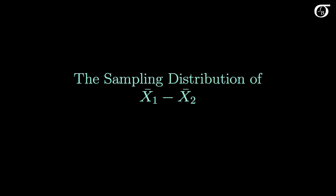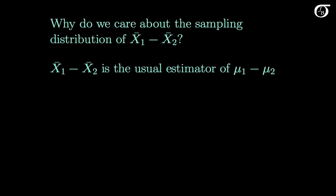Let's look at the sampling distribution of the difference in sample means. The main reason we care about it is that the difference in sample means is the usual estimator of the difference in population means. To construct the appropriate inference procedures for the difference in population means, we need to know the characteristics of the sampling distribution of its estimator, the difference in sample means.